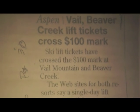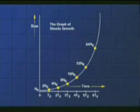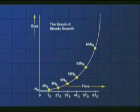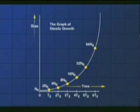Let's look at a generic graph of something that's growing steadily. After one doubling time, the growing quantity is up to twice its initial size. Two doubling times, it's up to four times its initial size. Then it goes to 8, 16, 32, 64, 128, 256...